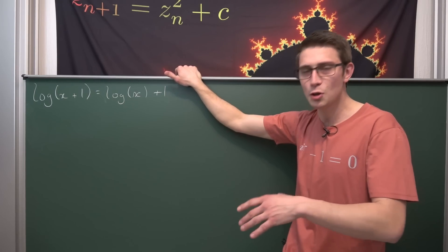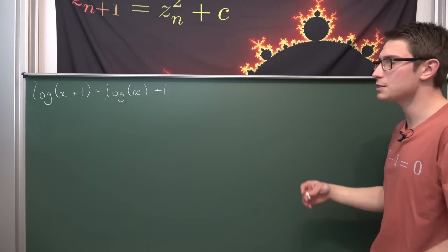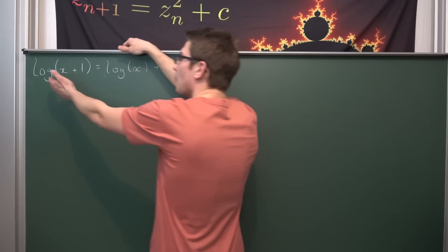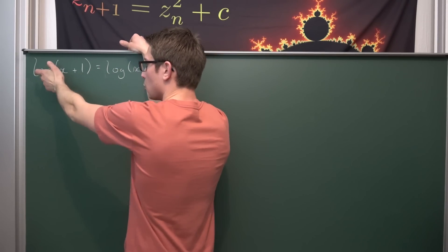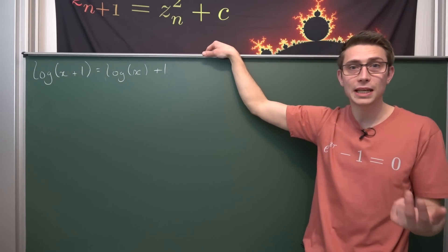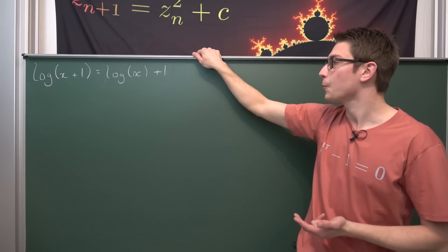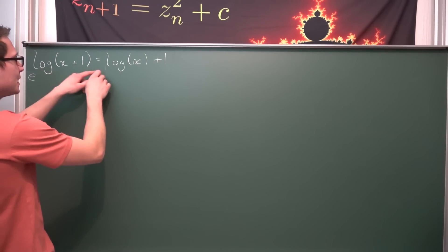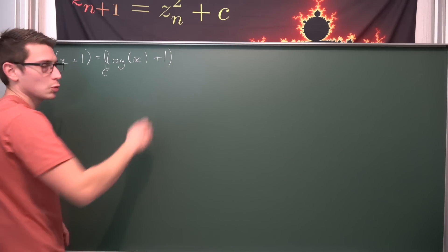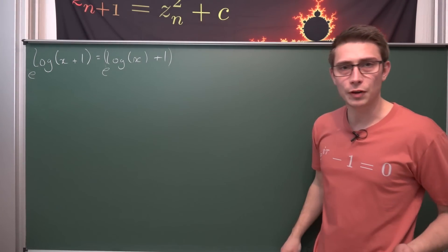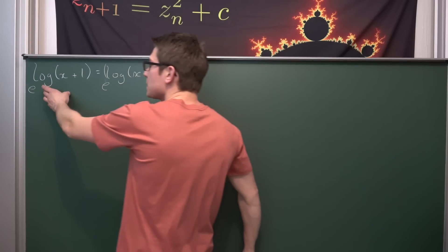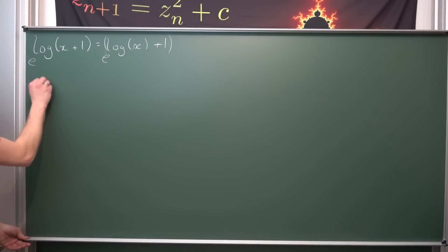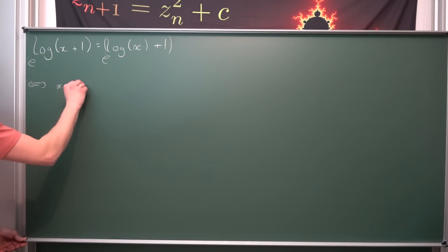And now we are going to dive right in. The first thing that comes to my mind when I see an equation like this would be to basically just raise both sides to the base. This right here is the logarithm base e — natural log, ln — meaning if we were to take the exponential on both sides, we're going to get rid of the logarithm. What this means is we are going to take e to the log of x plus 1 is equal to e to the log of x plus 1. Now the cool thing about raising some base to the logarithm of the same base is that e and log are going to cancel out, leaving us just with the argument — meaning this gives us x plus 1.